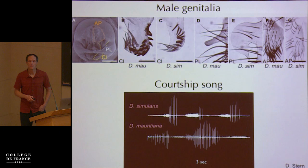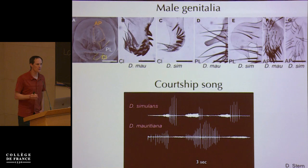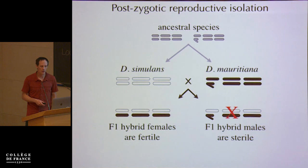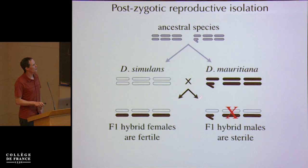There is some prezygotic behavioral isolation — they sing different songs — and in particular *D. mauritiana* females, some of the time, are choosy and prefer males that sing their own song. But the most important reason that we call these two different species is because there is strong postzygotic reproductive isolation in the form of hybrid male sterility. In both directions of the cross, F1 hybrid females are fine — they're viable and fertile. F1 hybrid males are viable and completely sterile.